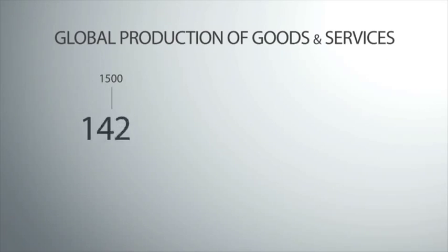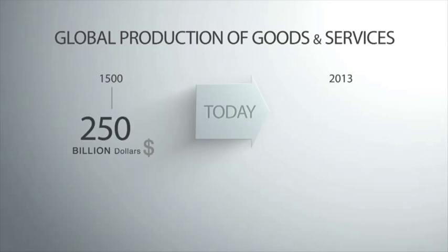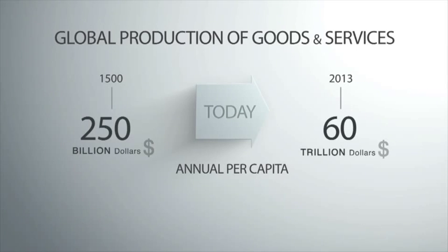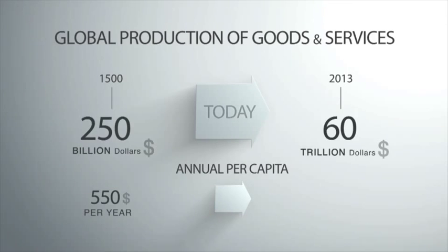In 1500, global production of goods and services in the entire world together is estimated to have been equal to about 250 billion dollars in today's dollars. Today, global production hovers around the mark of 60 trillion dollars. More importantly, in 1500, annual per capita production — the production of a single person on average — was 550 dollars a year. Today, on average, every man, woman and child on earth produces 8,800 dollars.